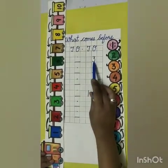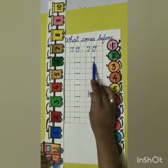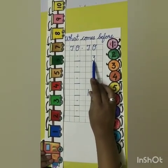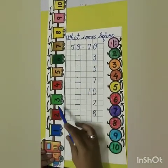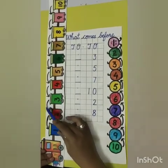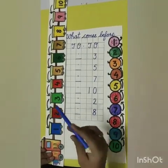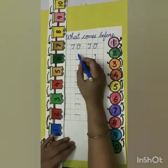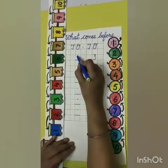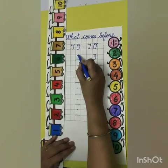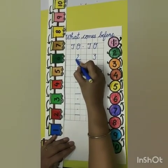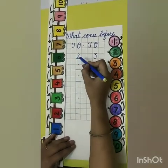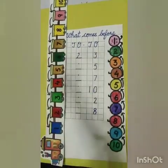Our number is 3. Tell me, what comes before 3? See in the train: 2. So we will write 2 under ones.